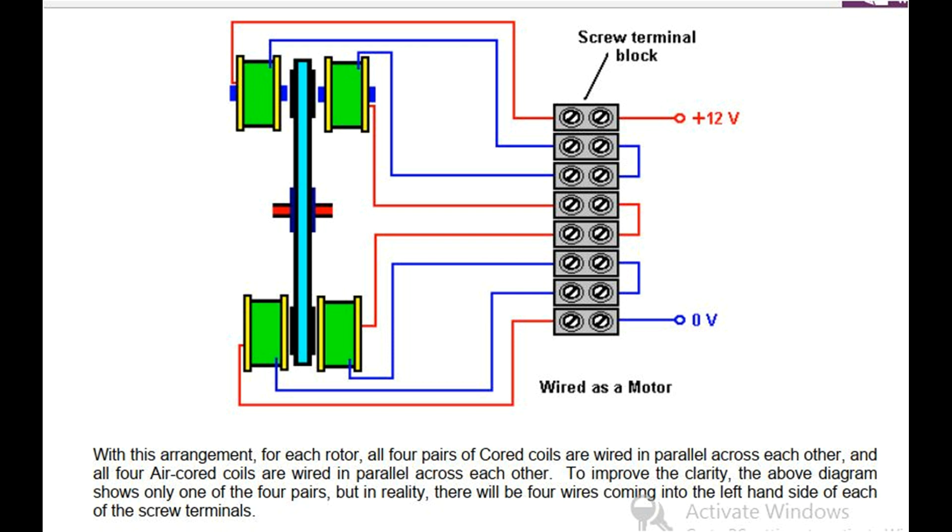Wired as a motor: With this arrangement, for each rotor, all four pairs of iron-cored coils are wired in parallel across each other, and all four air-cored coils are wired in parallel across each other. To improve clarity, the above diagram shows only one of the four pairs, but in reality, there will be four wires coming into the left-hand side of each of the screw terminals.